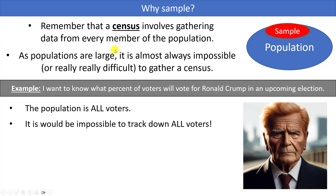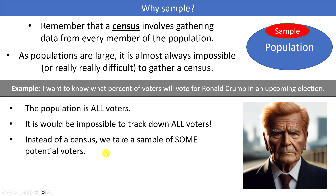Our population in this case would be all voters — all the people who will eventually turn out for this election. Tracking down every single voter would be a census, which in a way is what happens on election day when all the voters cast their vote. But the point is we want to predict the outcome ahead of time — a month ahead of time, is it looking good for Ronald Crump or his opponent? So instead, we'll take a sample of maybe a thousand voters.